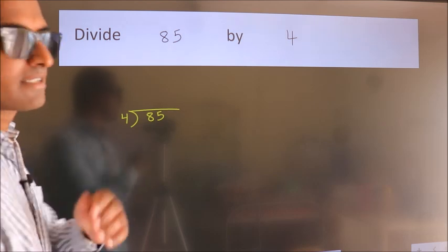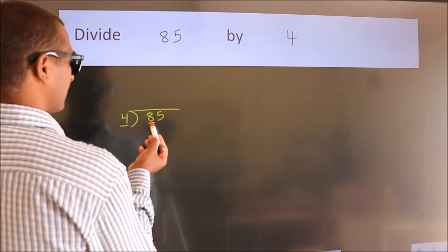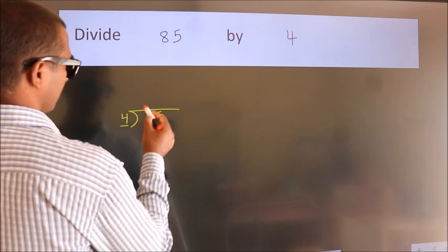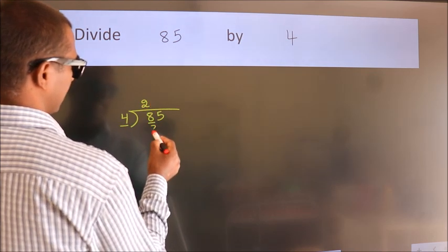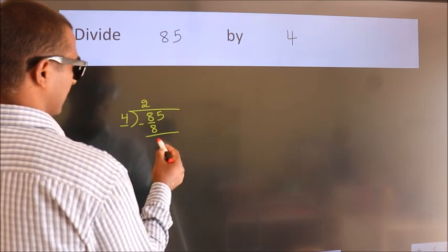Next, here we have 8 and here 4. When do we get 8 in the 4 table? 4 times 2 is 8. Now we subtract and get 0.